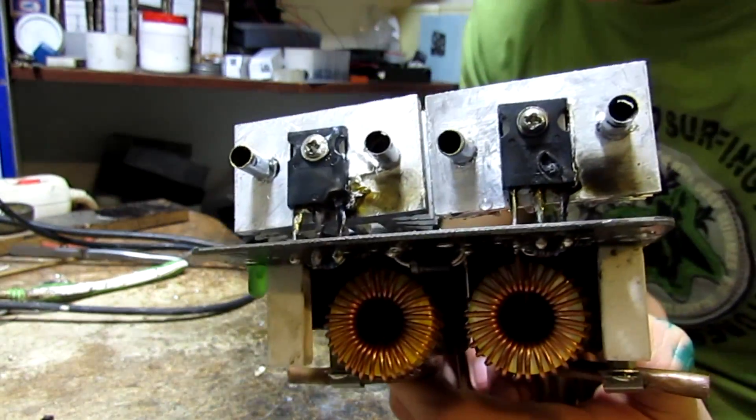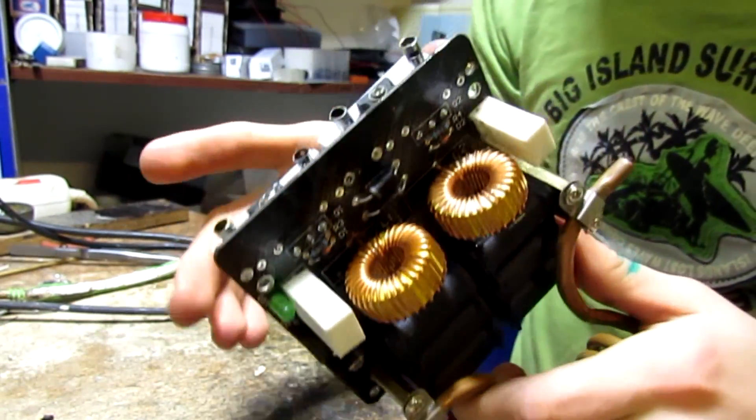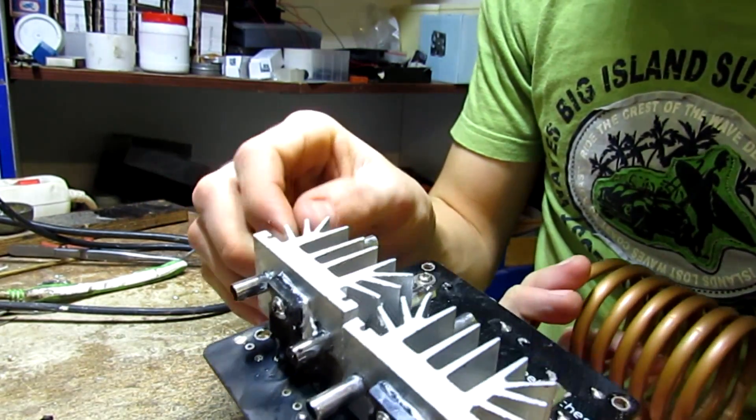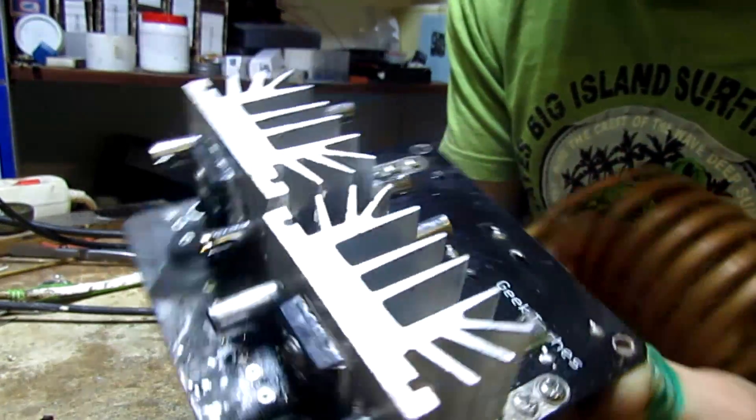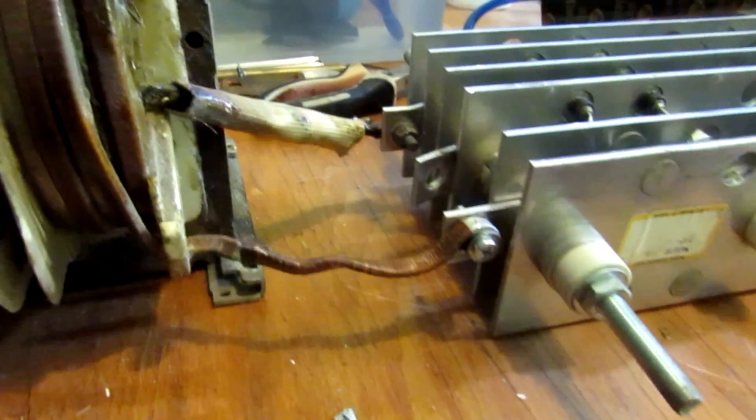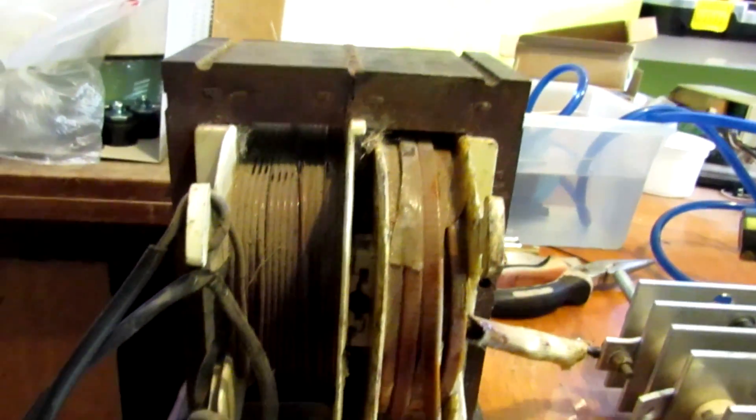As you can see I decided to make a water cooling for this system, and that's why I drilled holes in radiators. And now we need to buy a power supply on 48 volts and 20 amperes. It's really expensive that's why I decided to make it myself. I built it from a big transformer and diode bridge.